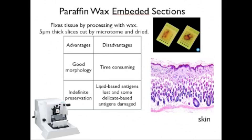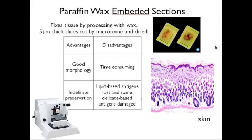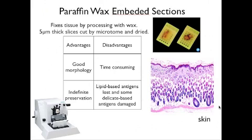The last one is paraffin wax embedded sections. Basically, what happens is that we get a tissue and fix it by processing it with wax — we just get the tissue and put it in wax. It allows up to 5 micrometer thick slices, cut by a microtome and dried. The advantage is that it allows for indefinite preservation because of the wax, and good morphological detail — here's an example of the skin, and as we can see, the detailing is pretty good. However, the disadvantage is that it's time-consuming, and preserving it in wax can be a destructive process for some delicate-based antigens, and it loses lipid-based antigens.